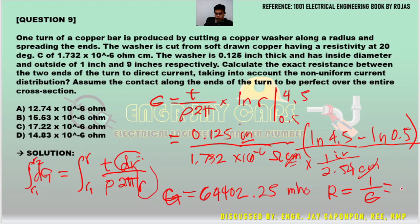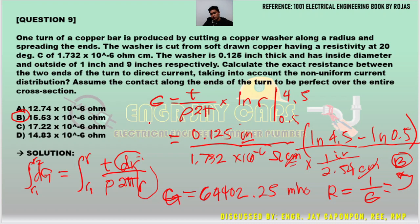The conductance G is the inverse of resistance, so R = 1/G. Computing 1 over G gives approximately 15.527 — wait, actually the resistance comes out to be the answer letter B. This problem is very challenging if you do not know the proper solution. We used integration to get G, then R equals 1 over G since conductance is the reciprocal of resistance.